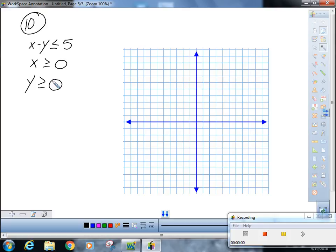Let's use the same strategy. For this one, X minus Y is less than or equal to 5. Negative Y is less than negative X plus 5. Divide both sides by negative 1, and you get Y—gotta flip my sign there—is greater than X minus 5.